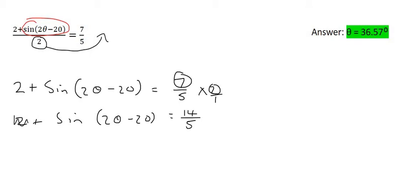Next step would be to bring this 2 over. And so we'll make it a minus 2 on the right hand side. And so we end up with the sin of 2 theta minus 20 equals to 14 over 5 minus 2, which you can type in on the calculator. And that's going to give you 0.8.